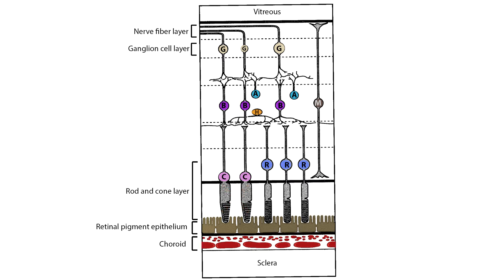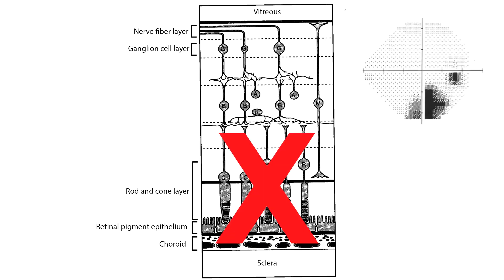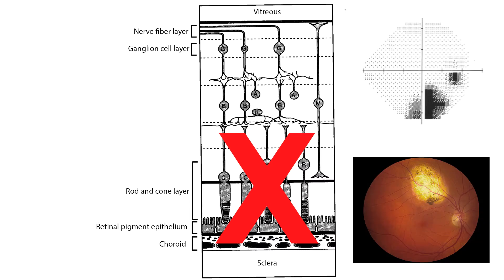Damage to cones causes loss of high-resolution vision and color vision. Damage to rods causes loss of night vision and peripheral visual field. Cones and rods depend on the underlying retinal pigment epithelium and the choroidal circulation which play supporting roles in vision transduction. Damage to the choroidal circulation, the pigment epithelium, or the photoreceptors produces scotomas, or blind areas in the visual field whose shape corresponds to the lesioned areas.